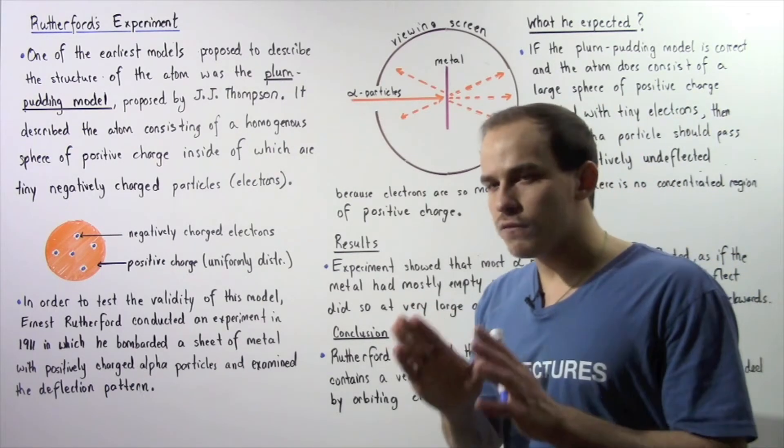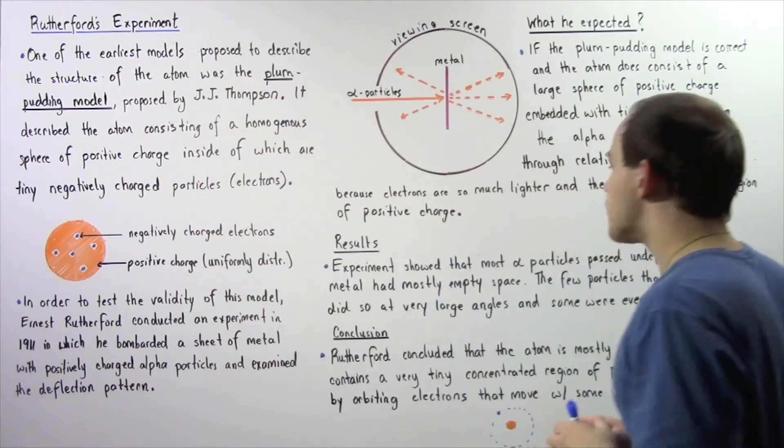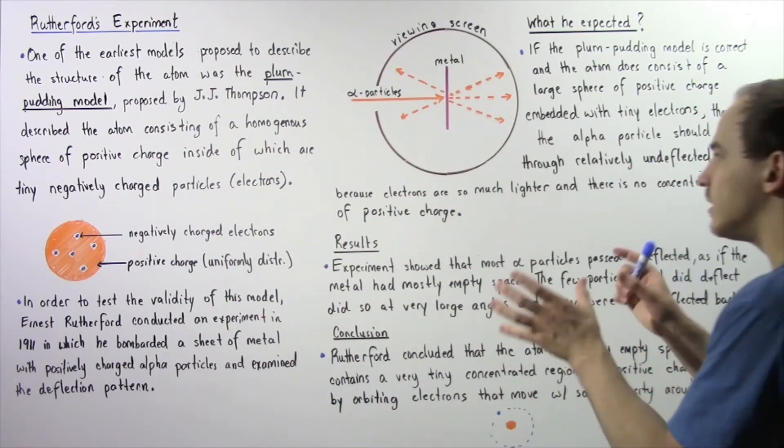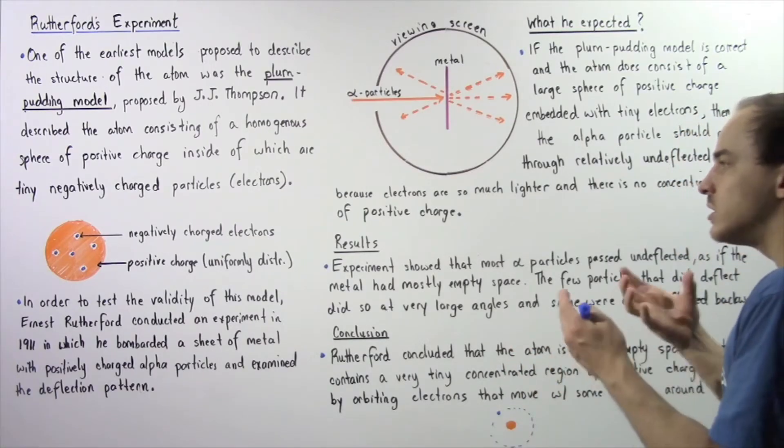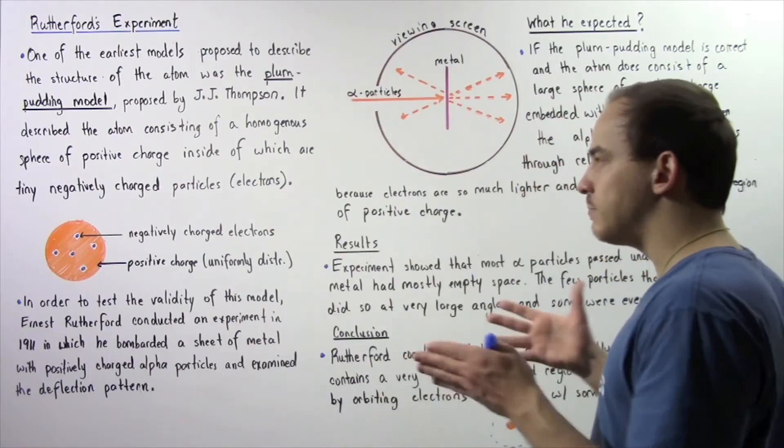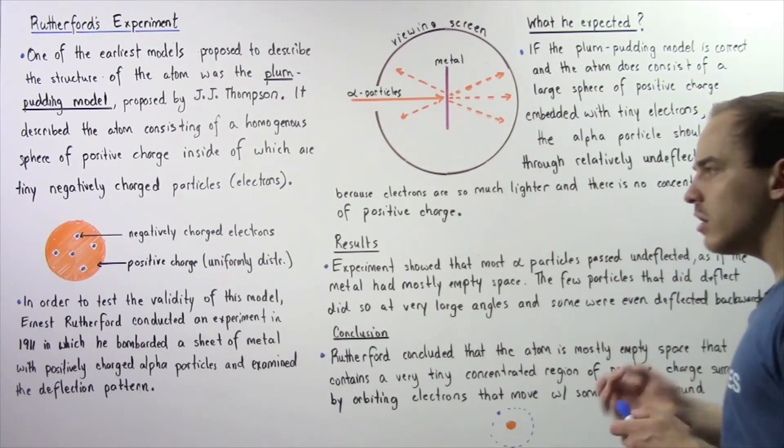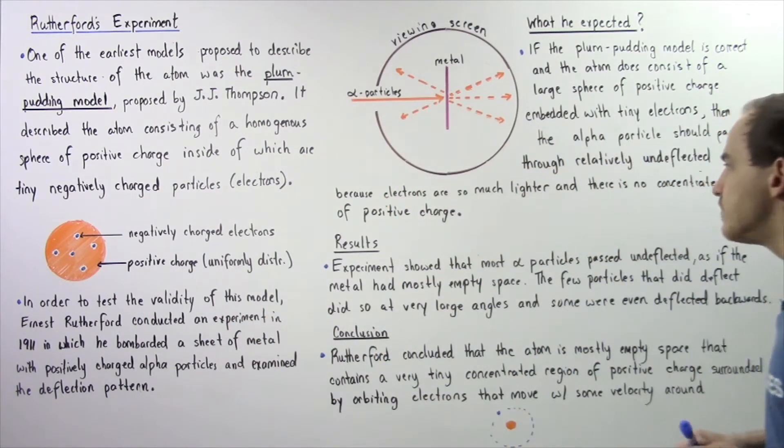That's because of two very important things that this model assumes. It assumes that the electrons are very light, and so when a collision between the alpha particles and those electrons takes place, the alpha particles will remain relatively undeflected.